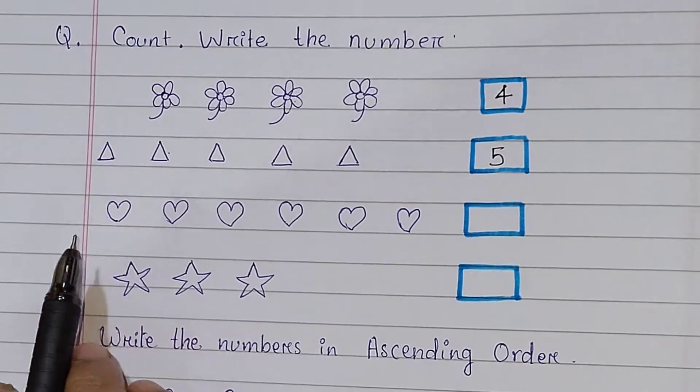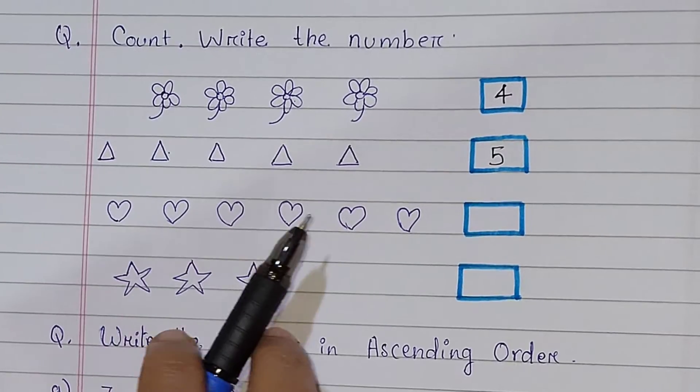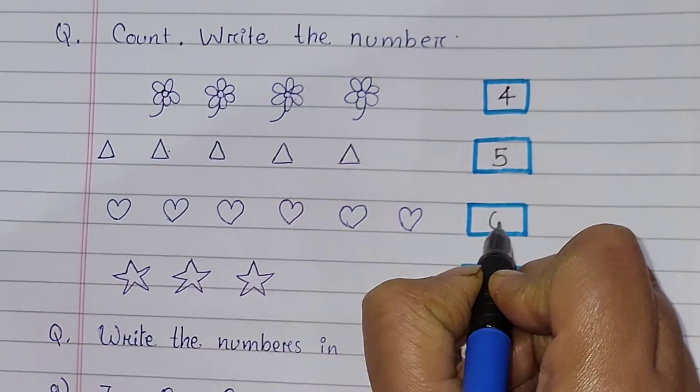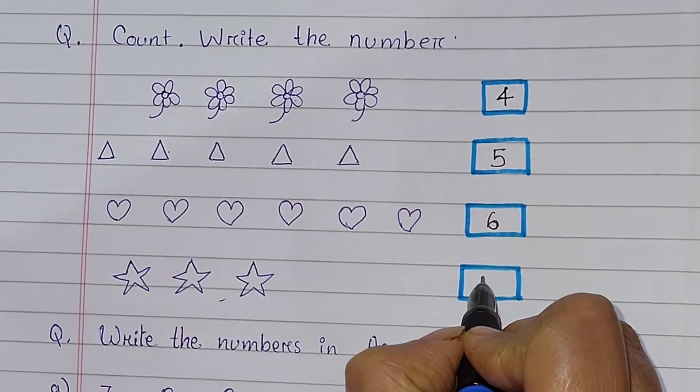Next, 1, 2, 3, 4, 5, 6. 6 hearts. 1, 2, 3. 3 stars.